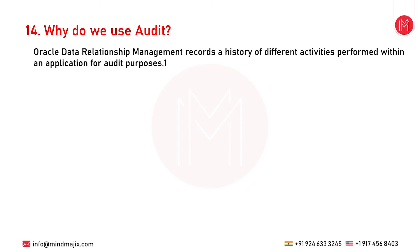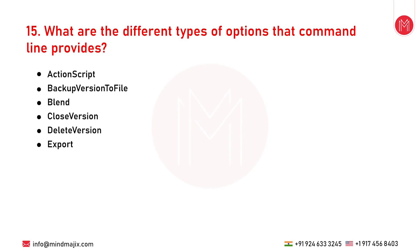The next question is: why do we use audit? Oracle DRM records a history of different activities performed within an application for audit purposes. The transaction history logs all operations performed, including changes to version data, application metadata, and user security. The job history tracks the completion of long-running processes such as imports, blenders, and exports.